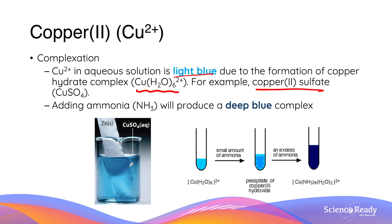If we add ammonia solution to a copper solution, this will produce a second complex that has a deeper blue appearance. So sometimes when the light blue color of the copper solution is difficult to observe, we can add a small amount of ammonia to produce a much darker shade of blue to confirm the presence of copper ions.